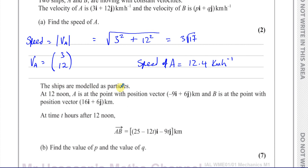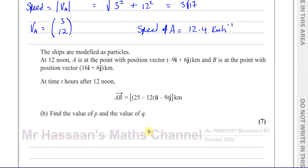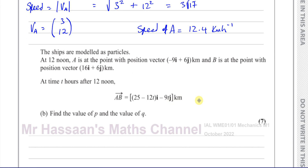Now for part B. It says the ships are modelled as particles at 12 noon. A is at the point with position vector −9i + 6j kilometres, and B is at the point with position vector 16i + 6j kilometres. At time t hours after 12 noon, the vector from A to B is given by (25 − 12t)i − 9tj, which I can write as the column vector (25 − 12t, −9t).